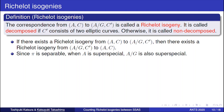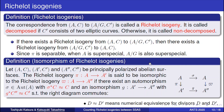If there exists a Richelot isogeny from one surface to another, then there exists a reverse direction or dual Richelot isogeny in the opposite direction. And by definition, since pi is separable, if A is super-special then the target surface is also super-special. For two Richelot isogenies pi and pi-bar, if we have an automorphism sigma and an isomorphism z such that the diagram commutes and the numerical equivalence relations hold, then these two Richelot isogenies are isomorphic.